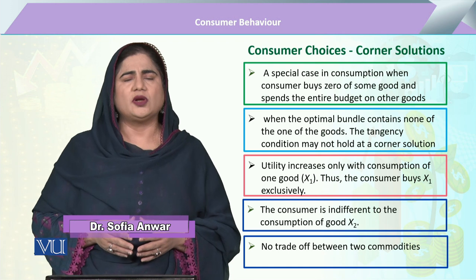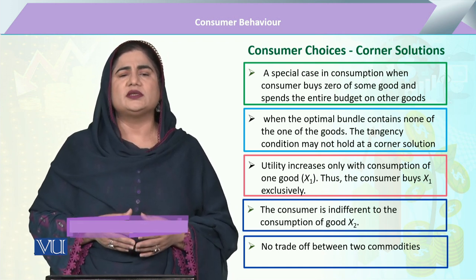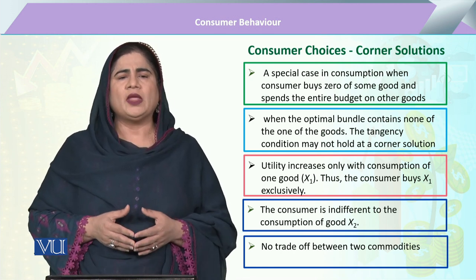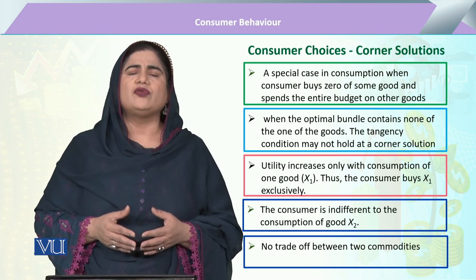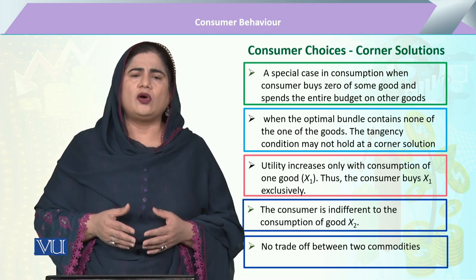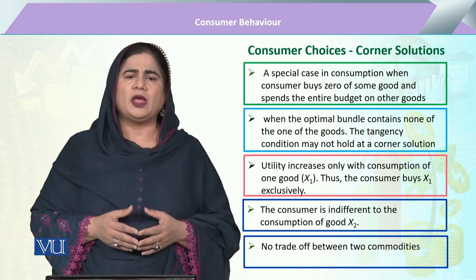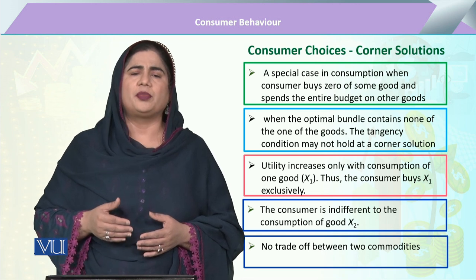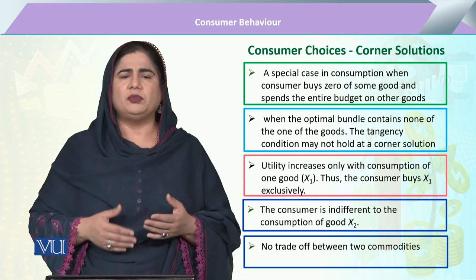Today's lecture is particularly related to that special case when the consumer does not have a preference for both commodities. Generally, we say the consumer is indifferent about various bundles of X1 and X2 along his indifference curve. But when he is not indifferent and has a particular preference for only one commodity, this condition will be different.